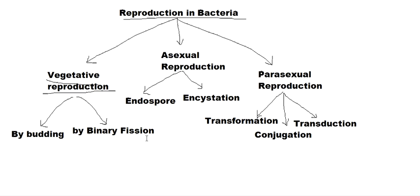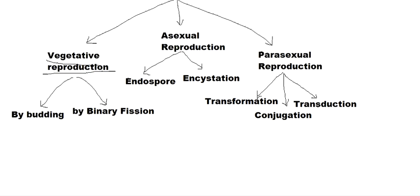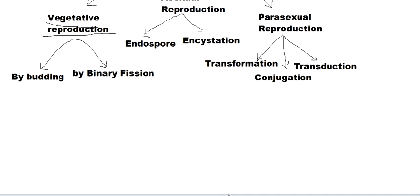Hello everybody. In this video we are going to talk about vegetative reproduction in bacteria. There is nothing very much special — it is by budding and by binary fission. Let us discuss about them in a nutshell.